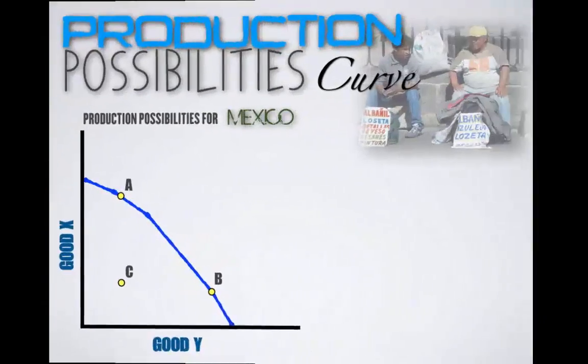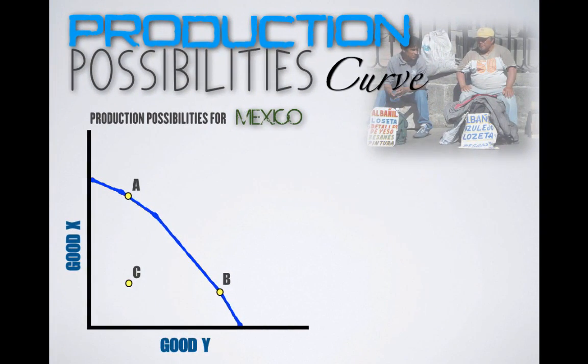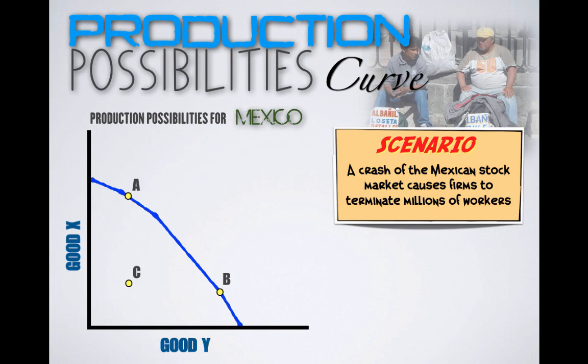For Mexico: a crash of the Mexican stock market causes firms to terminate millions of workers. Mexico is going through an economic downturn, and with workers losing jobs by the millions, unemployment is rising. Mexican workers cannot find jobs, so their labor goes to waste. This wasted labor represents productive inefficiency, and as a result Mexico will now produce inside its production possibilities curve at Point C.